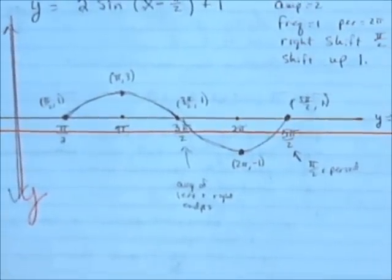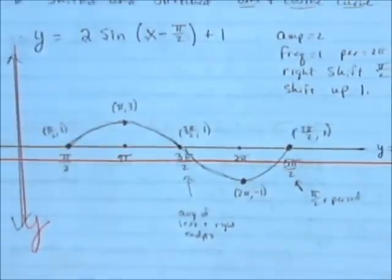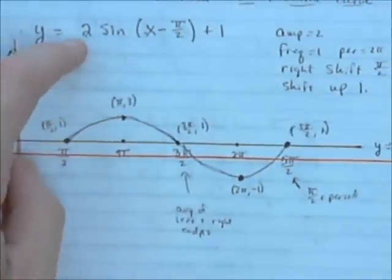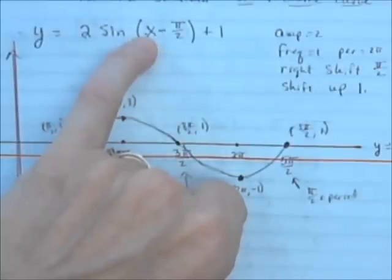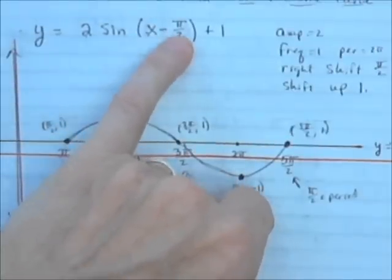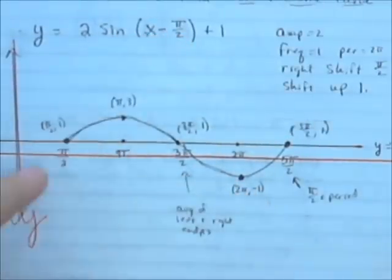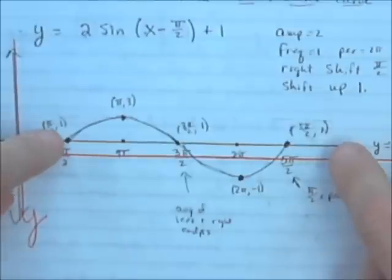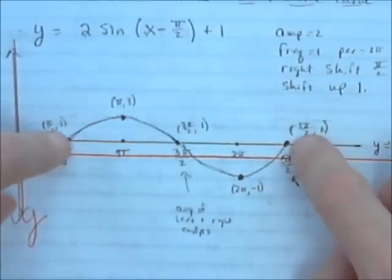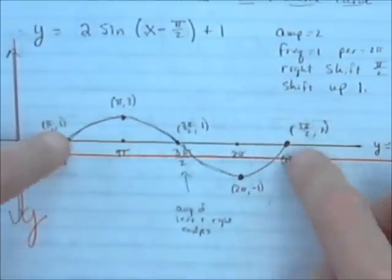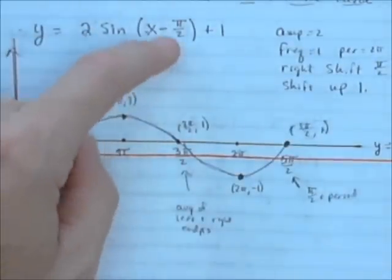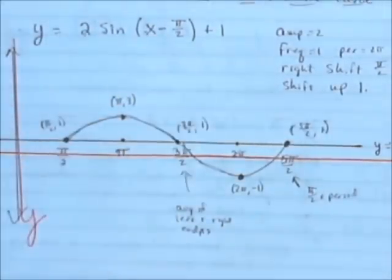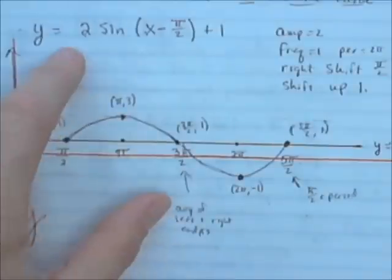We'll be practicing a lot of these sine and cosine curves in class with various amplitudes. The tougher ones are when you get a frequency that's not equal to 1 and a horizontal shift at the same time — they get very tricky for figuring out where the starting point and ending point fall. But that's an introduction to graphing a sine curve with an amplitude, a horizontal shift, and a vertical shift.